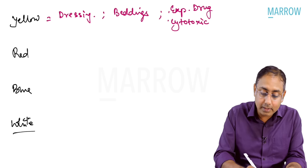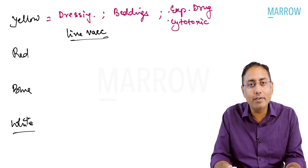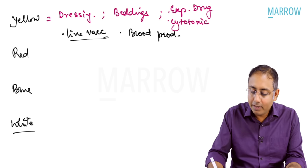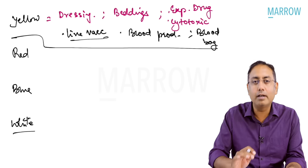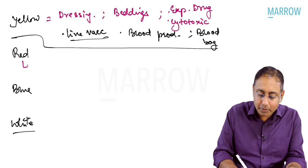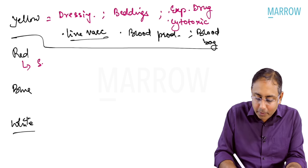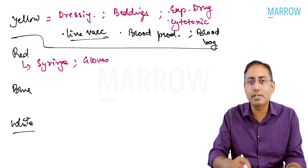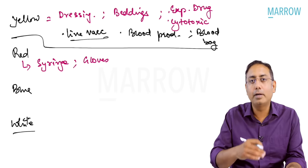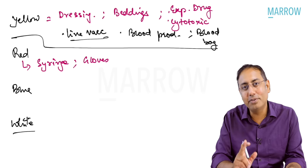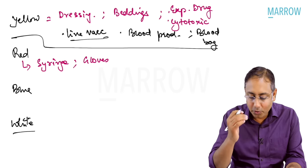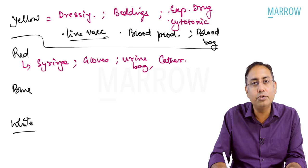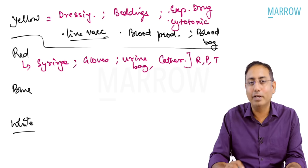Red category: all plastic syringes and all types of gloves (nitrile, latex — regardless of blood type) go into red. Also urine bags, urinary catheters, Foley tubes. Remember: rubber, plastic, and tubes go into the red category. Blue category: broken glass, ampoules, vials, any broken glass, and metallic orthopaedic implants go into blue.